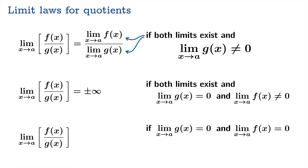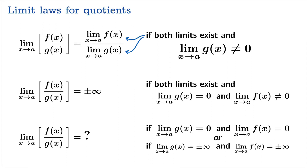The most interesting and critical case is what happens when both the numerator and denominator functions have limit zero. This is the so-called zero over zero indeterminate form. The answer is: we have no idea, unless you do further work to analyze that limit — the answer could be any number of things. There's also another indeterminate form where both the numerator and denominator diverge to positive or negative infinity in any combination. That's called the infinity over infinity form.